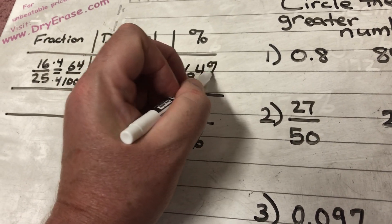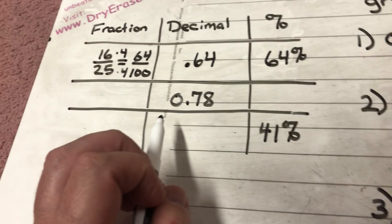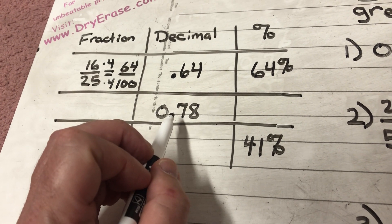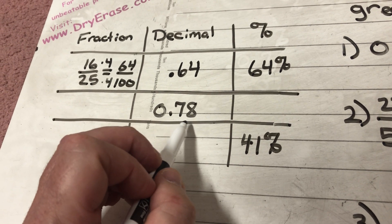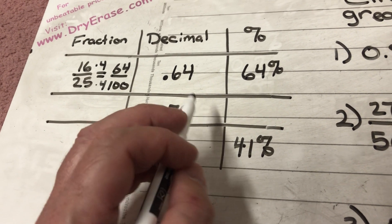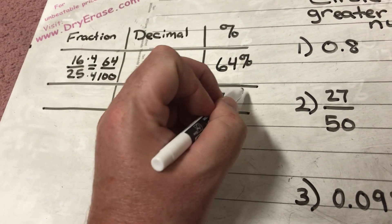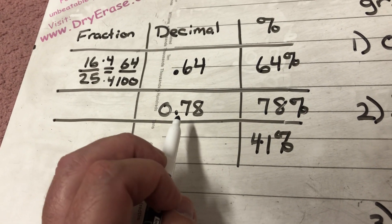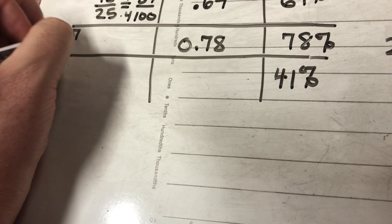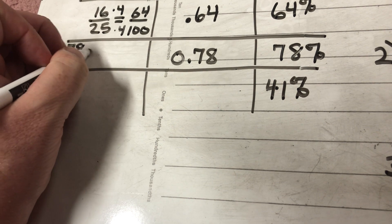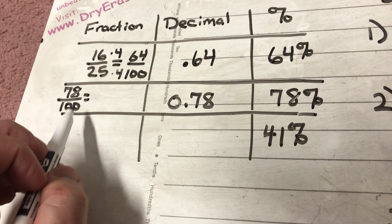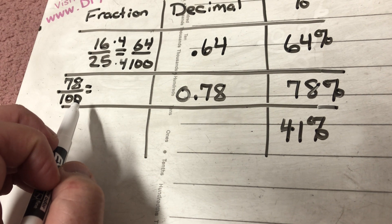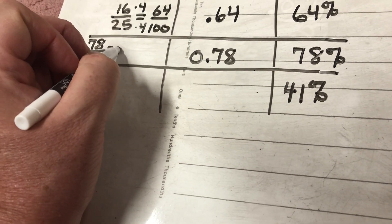In the next row we're given the decimal 0.78. I can straightforwardly turn the decimal into a percent: move the decimal once, twice — it goes right after the eight — so the equivalent percent is 78 percent. Then I have to turn it into a fraction. I know this is 78 hundredths, so I start with 78 over 100. That fraction must be in simplest form. Both numbers are even, so they're divisible by 2.